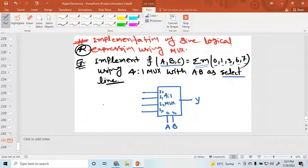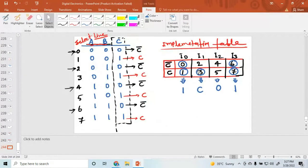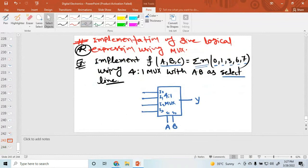A, B is a select line. And then the input terms are: I0 is, just see in this slide, I0 is 1, I1 is C, I2 is 0, and I3 is 1. So simply you can write this value: 1, C, 0, 1. So this is the final answer.